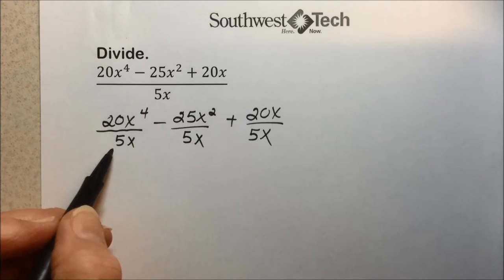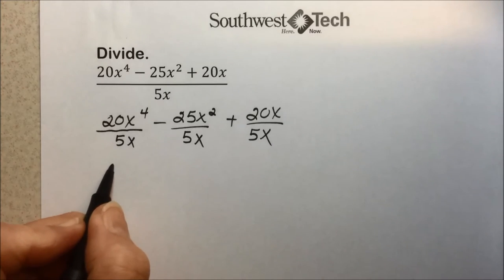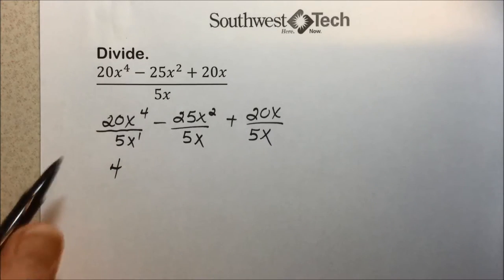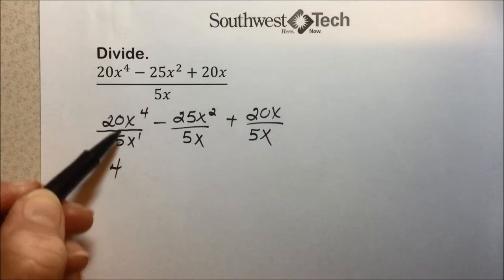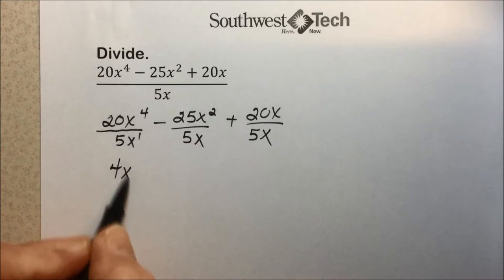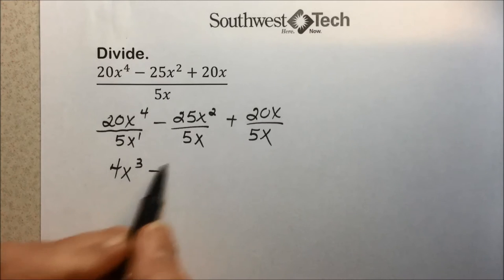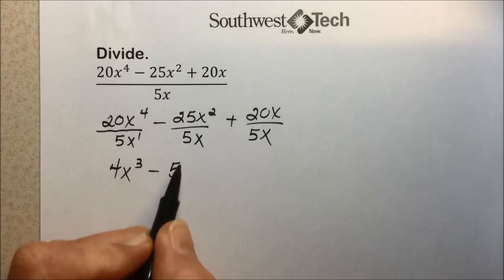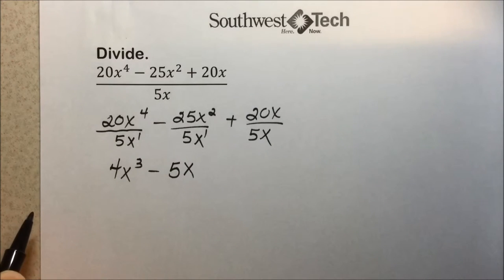Just like the monomial divided by a monomial example, we're going to divide the coefficients. 20 divided by 5 leaves 4. x to the first power in the denominator—subtracting exponential powers because of division of common bases—gives x to the 4 minus 1 or third power. 25 divided by 5 is 5. x to the second divided by x to the first, subtract your exponential powers, leaves x to the first power.